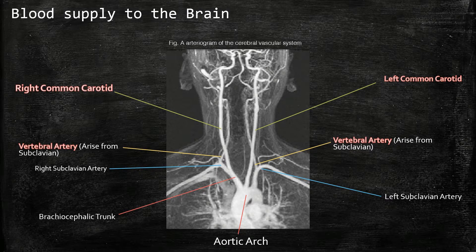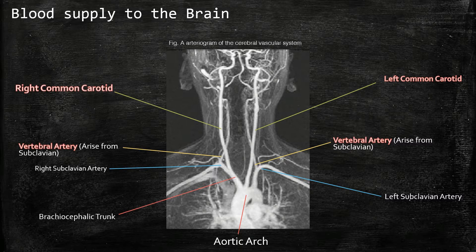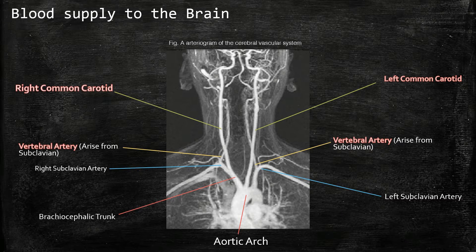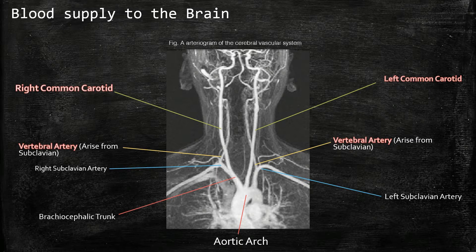The common carotid arteries ascend towards the brain where they differentiate into internal and external carotid arteries. The external carotid artery supplies the face, whereas the internal carotid artery supplies the anterior circulation of the brain.